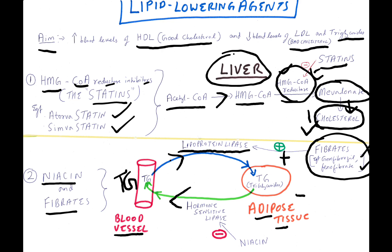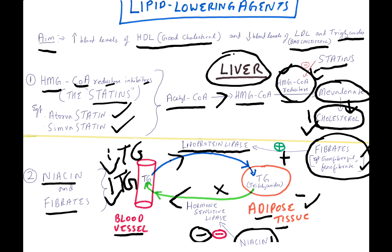By stimulating lipoprotein lipase, triglycerides from the blood vessel are moved to adipose tissue, hence the triglyceride level in the blood vessel is decreased. What niacin does is inhibit hormone-sensitive lipase, hence triglycerides cannot be moved to the blood vessel, and again the blood levels of triglycerides are decreased.